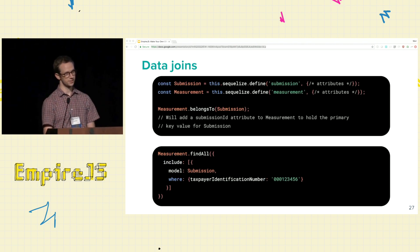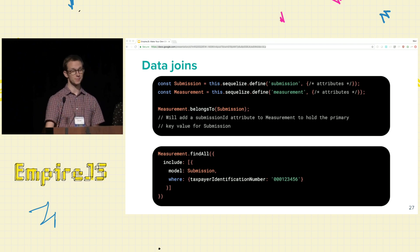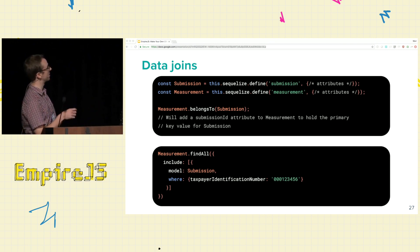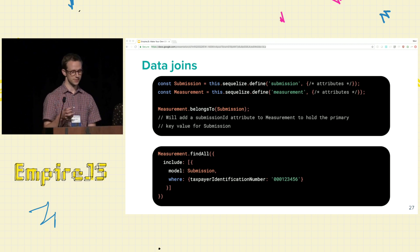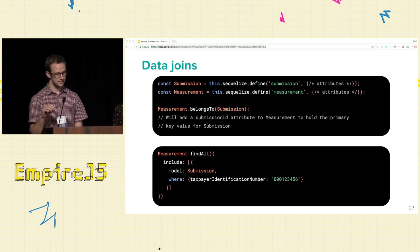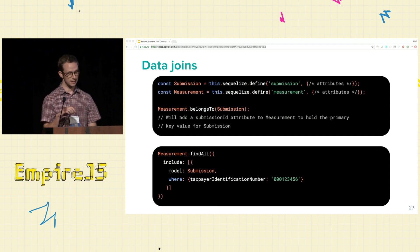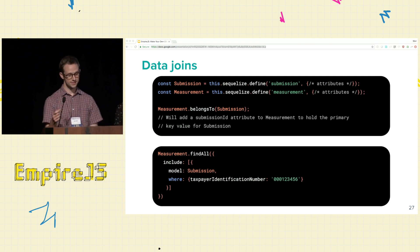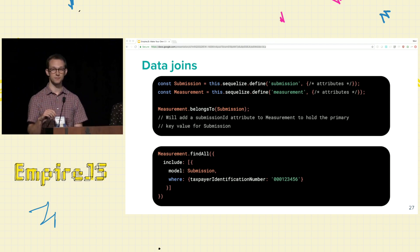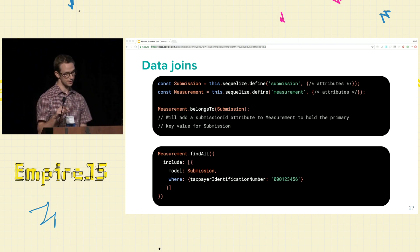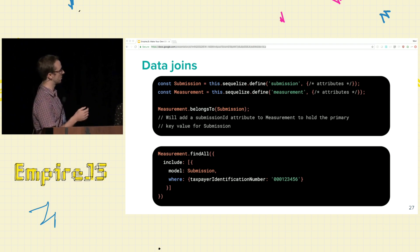Another main feature of an ORM is the ability to join data between tables. We defined a submission model and a measurement model — measurements are the things on which doctors are being evaluated. We define a relationship: every measurement belongs to a submission, which adds a submission ID attribute onto every measurement instance establishing the foreign key relationship. We can then query measurements based on the attributes of their submissions — for example, getting all measurements whose submission has a taxpayer identification number of 001234556.